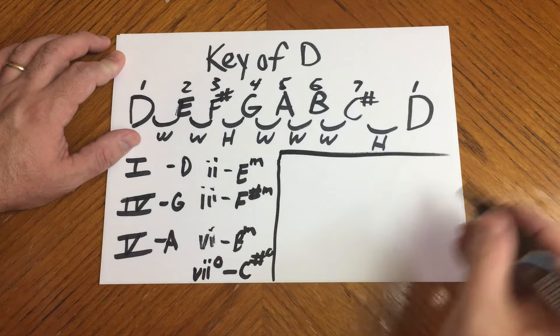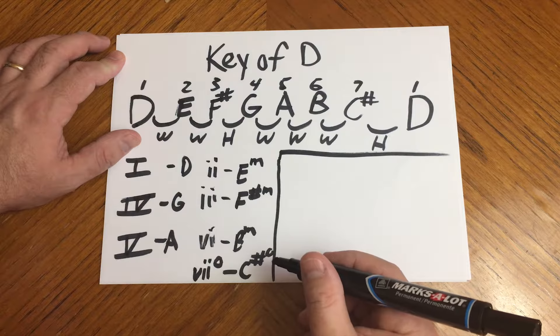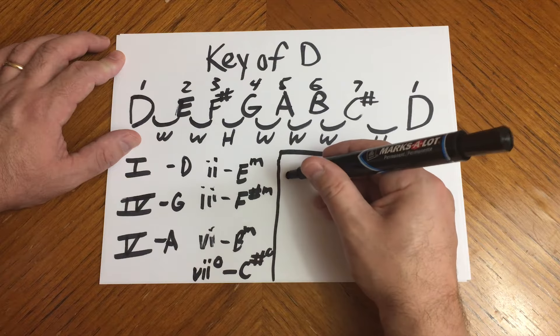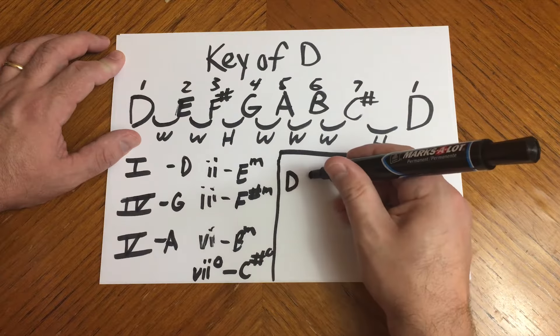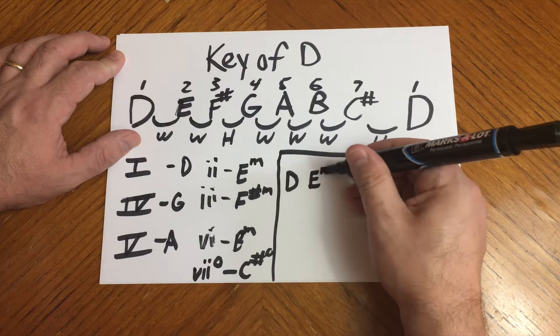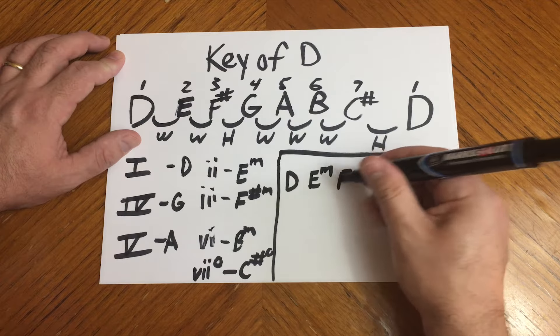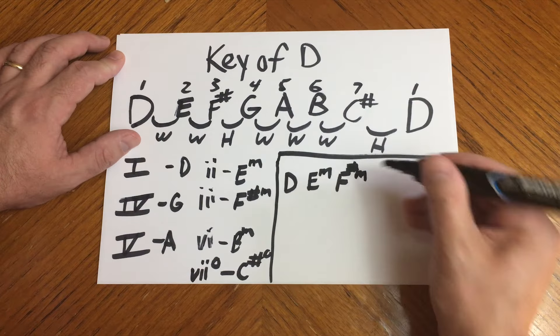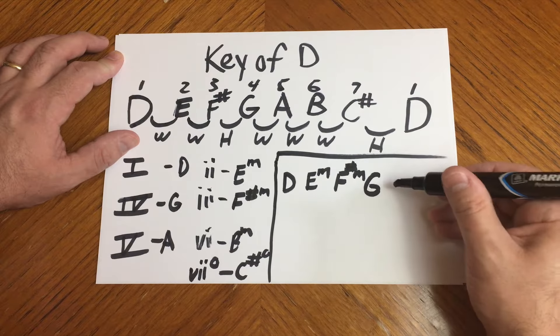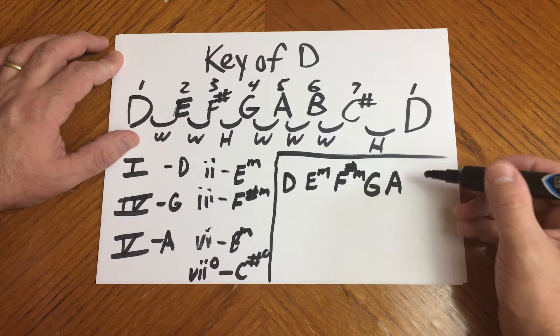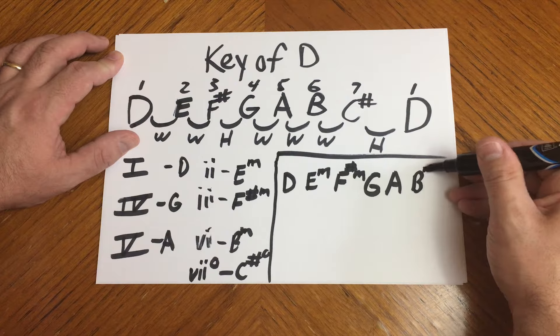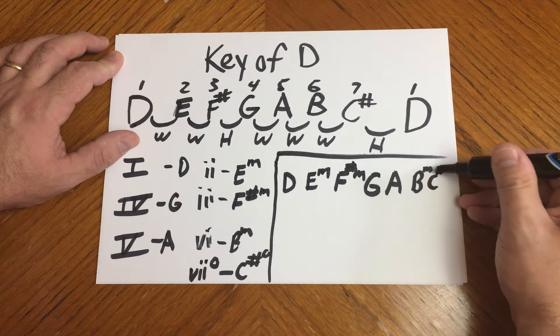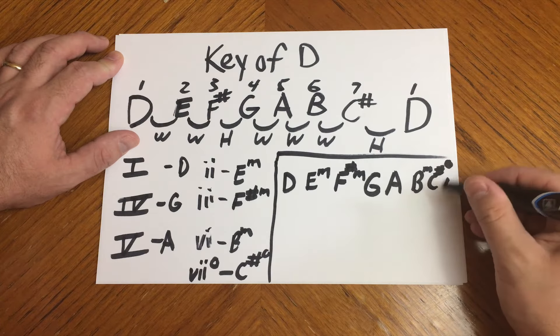So we can say for the key of D, D, E minor, F sharp minor, G, A, B minor, C sharp diminished, and then we have D again.